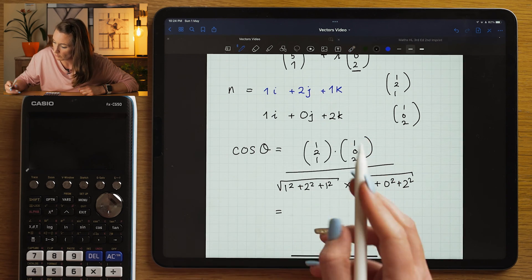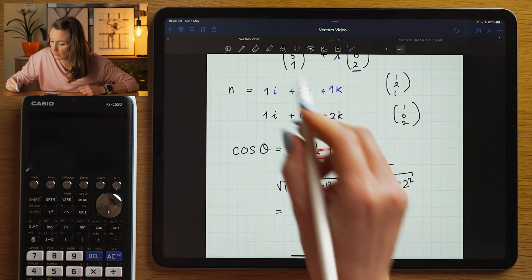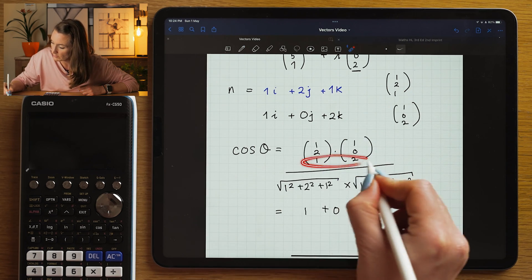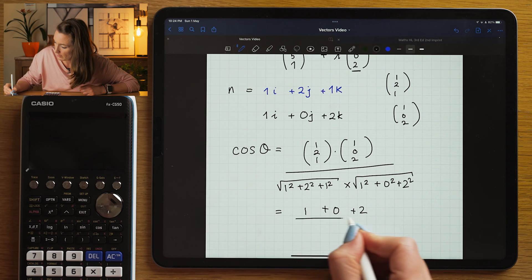So let's calculate the dot product here. This is going to be 1 times 1, which is 1. This is going to be 2 times 0, which is going to be 0. And the last one is going to be 1 times 2, which is going to be 2.